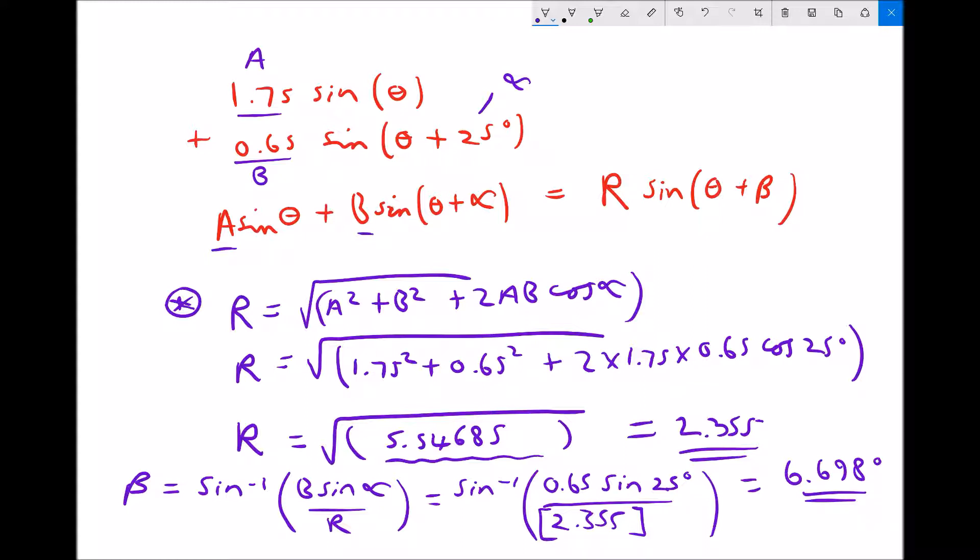Well if you recall from the previous video we expressed that final angle in radians. So therefore to convert β to radians I'm going to need to use my conversion factor of times 2π over 360. So our conversion from degrees to radians is times 2π over 360. Now when I do that for our angle in degrees there, 6.698 times 2π over 360 gives me 0.12 radians.